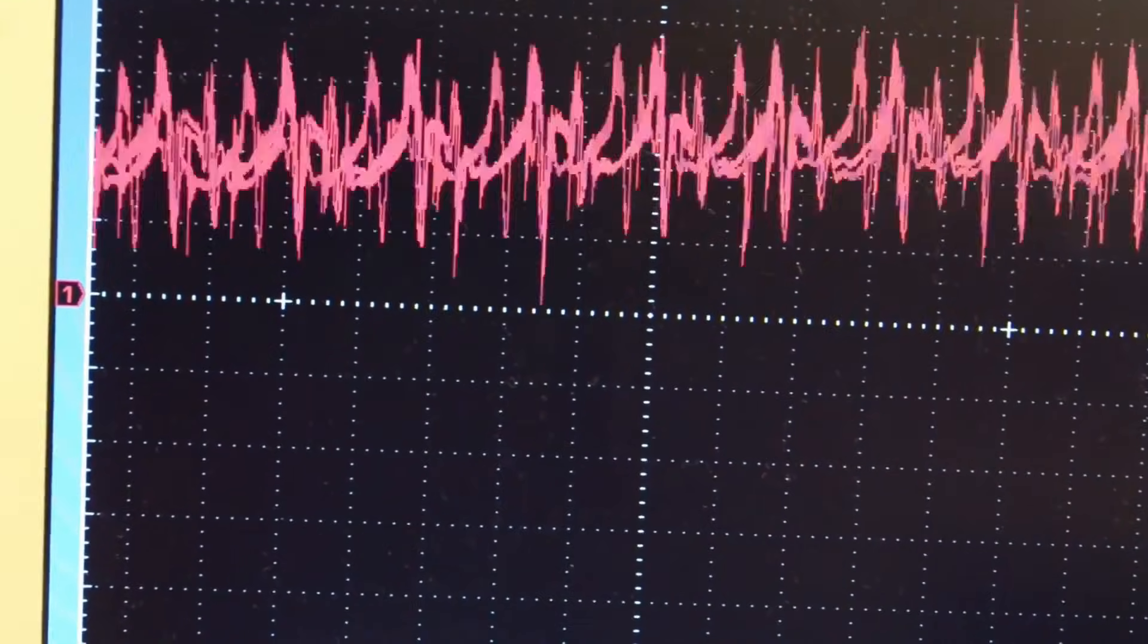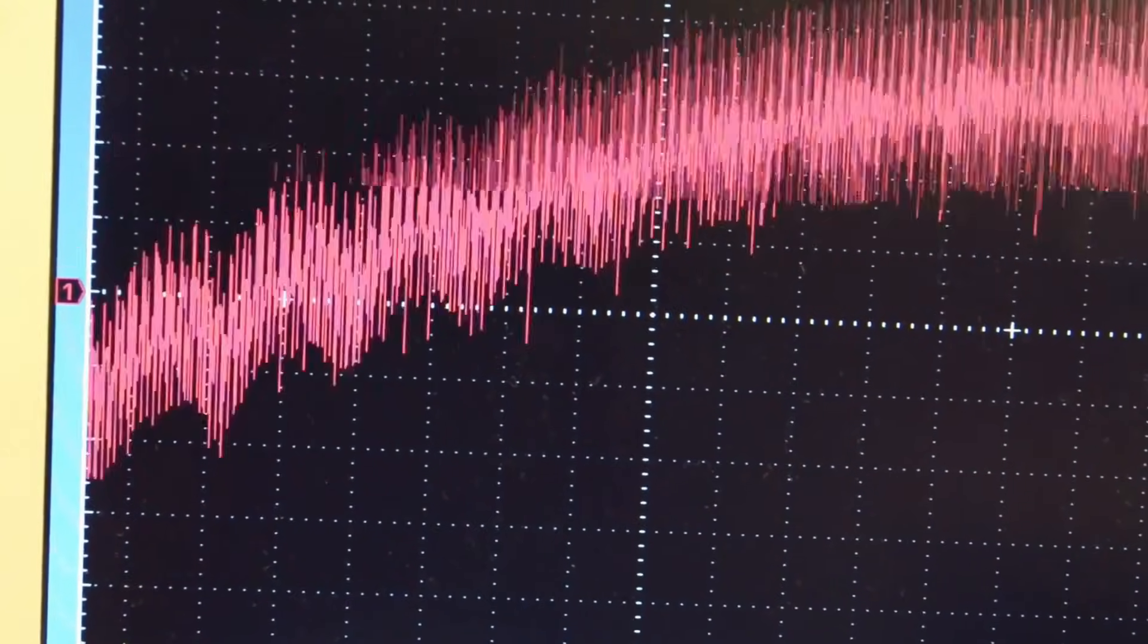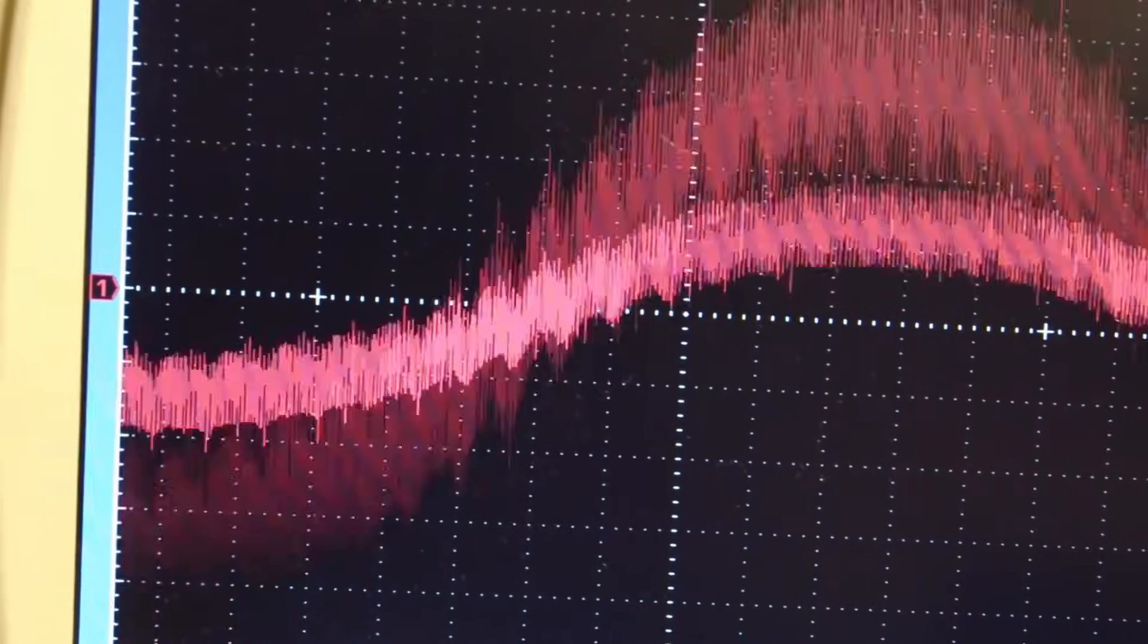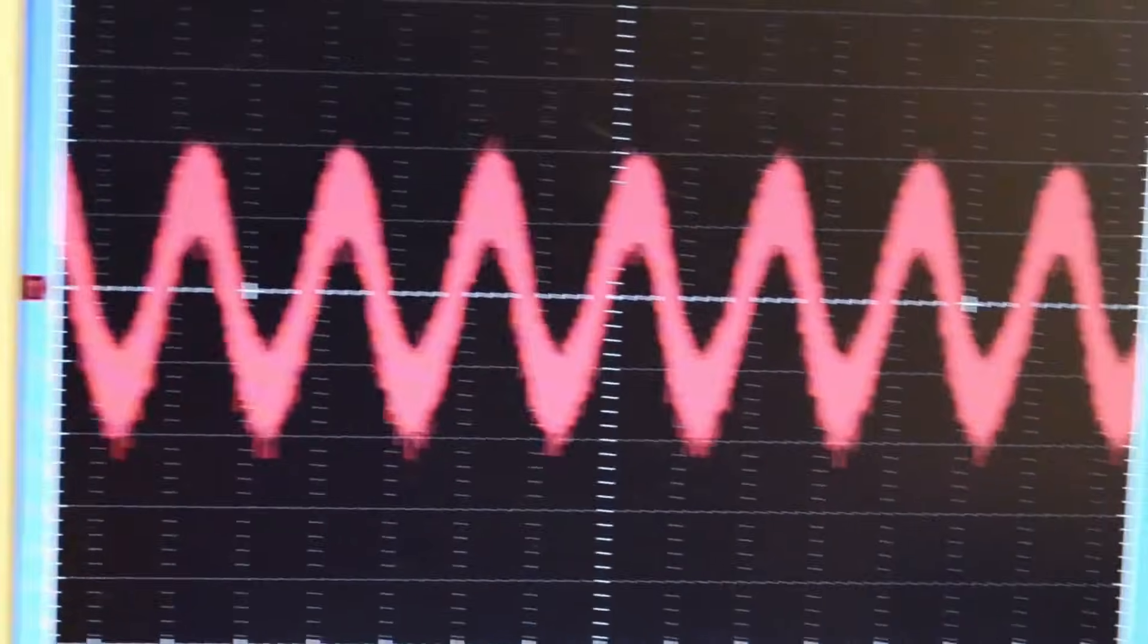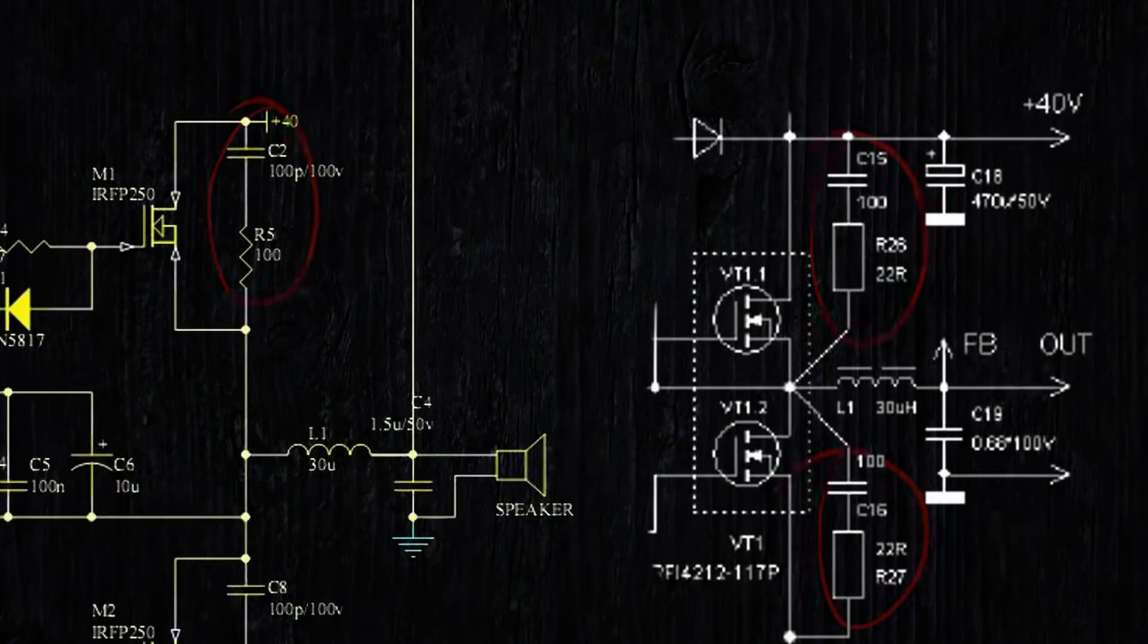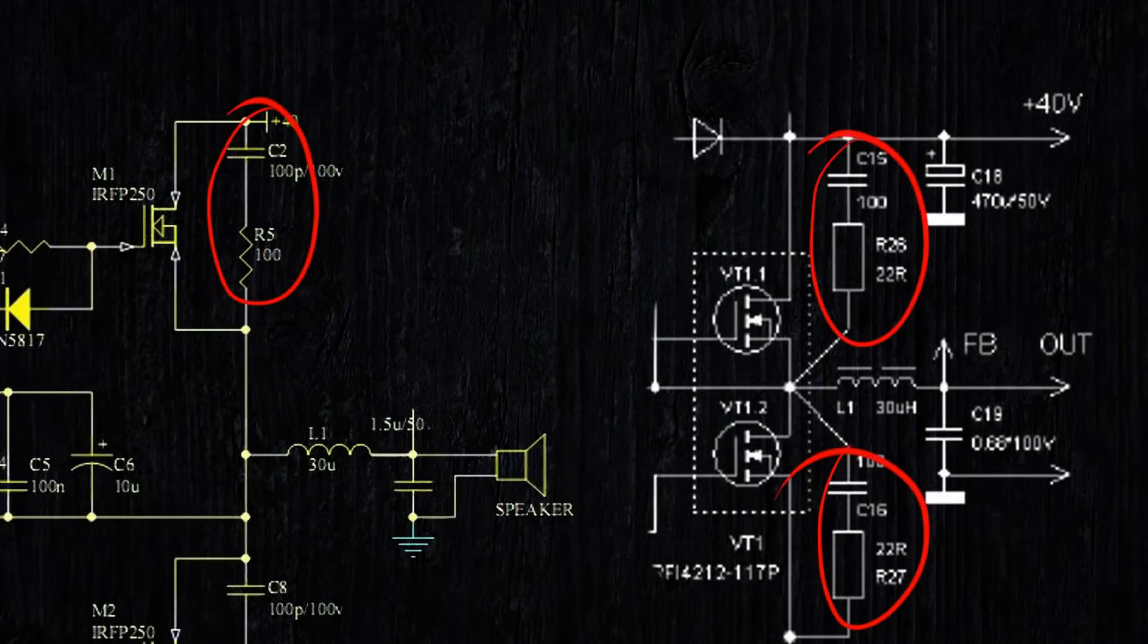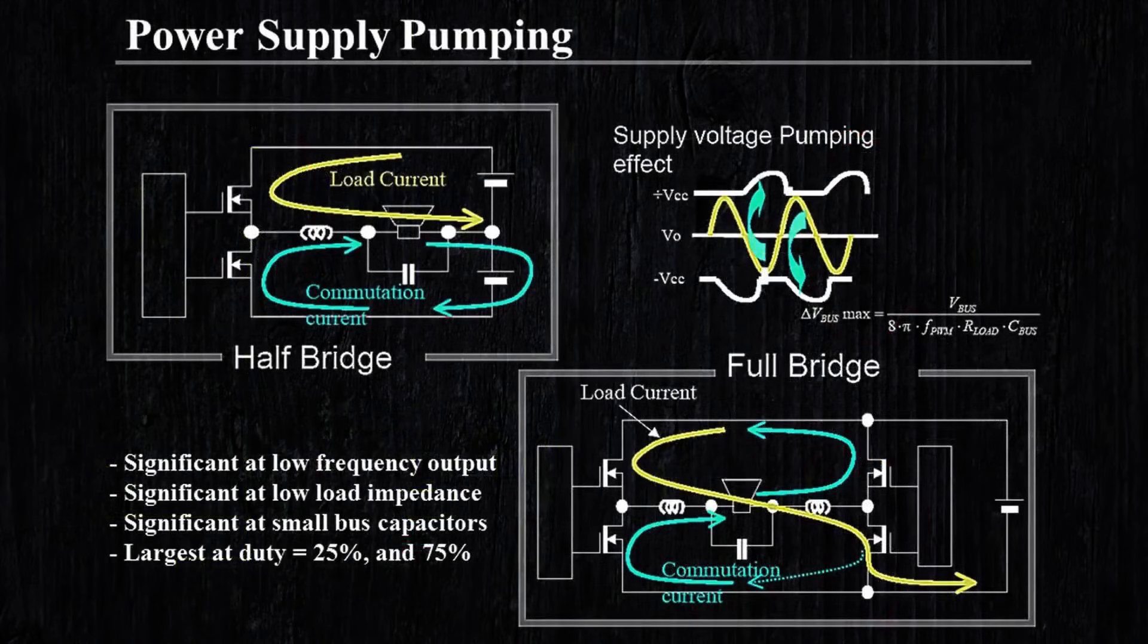For class D amplifiers, it is necessary to select transistors with minimal internal resistance and with a margin for voltage. Also, RC snubbers are often placed in parallel with transistors in circuits to reduce spikes. Due to the pumping effect, which can cause the voltage on the transistor to rise above the permissible level.